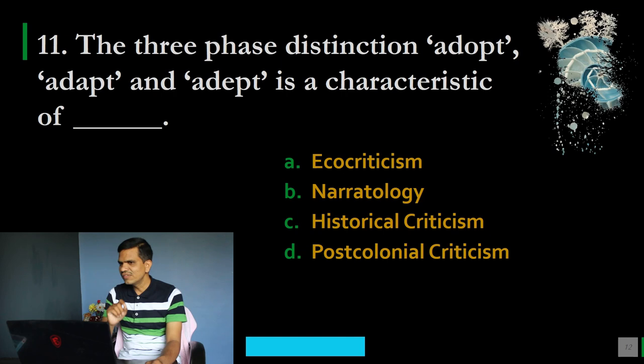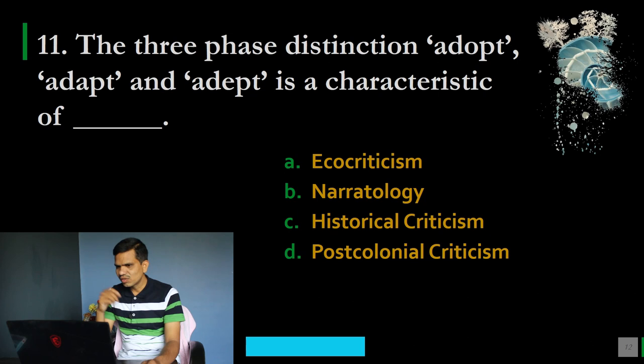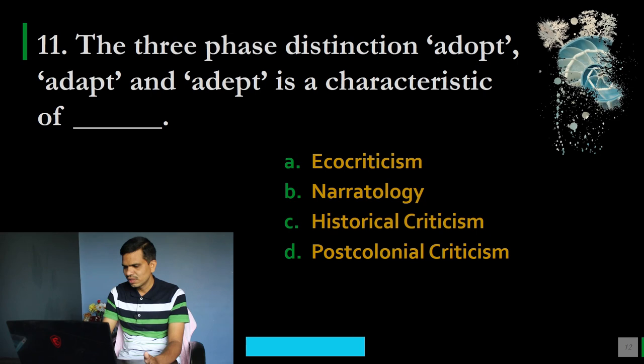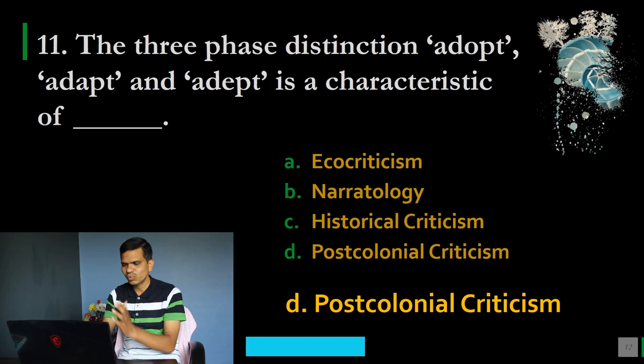Question number 11: The three-phase distinction — Adopt, Adapt, and Adept — is a characteristic of which theory? Options: A. Ecocriticism, B. Narratology, C. Historical criticism, D. Post-colonial criticism. The correct option is D, post-colonial criticism. We have these three phases in post-colonial criticism.